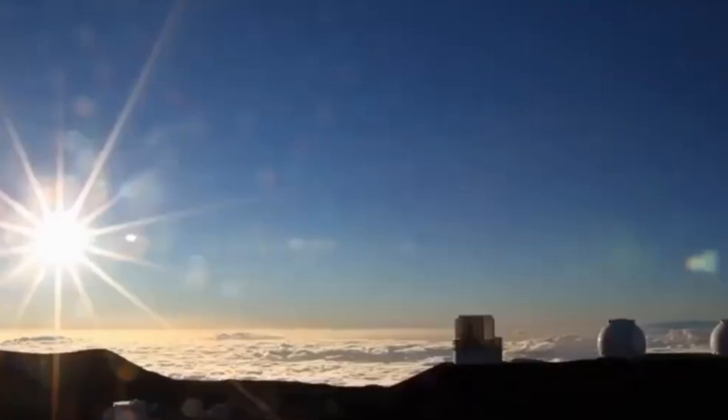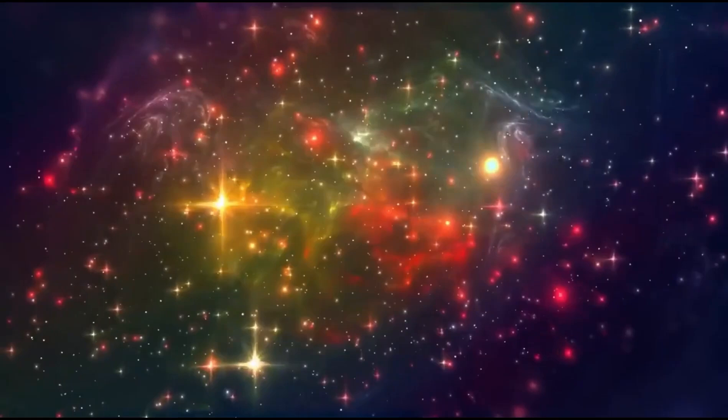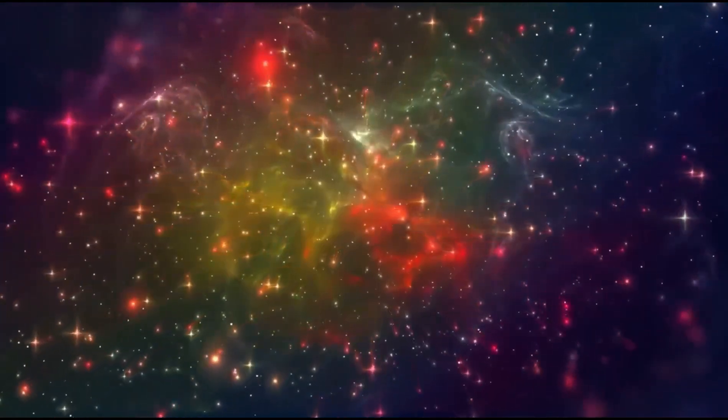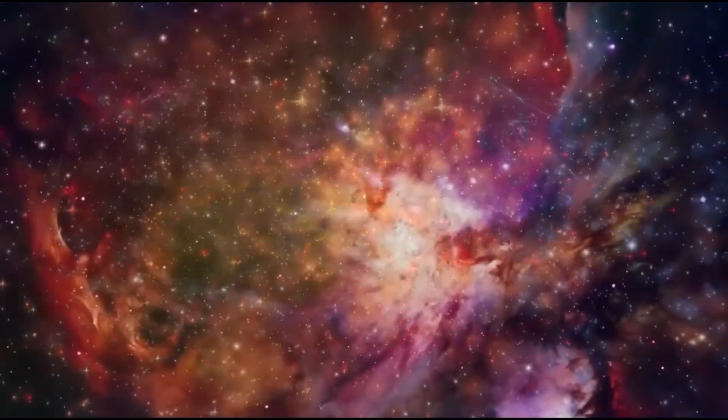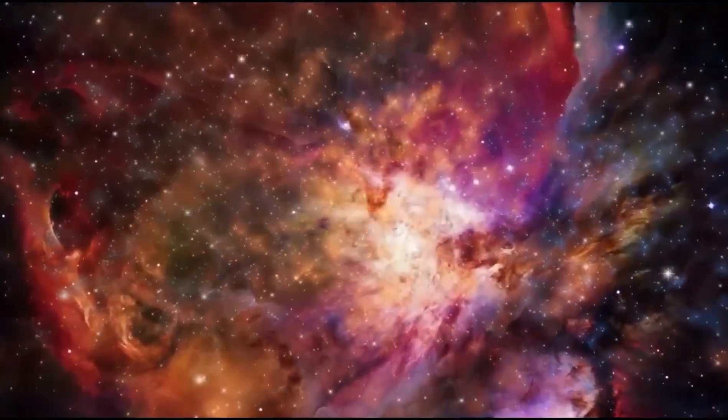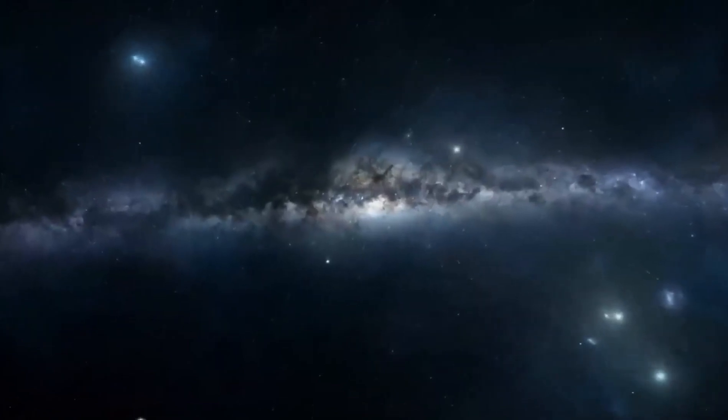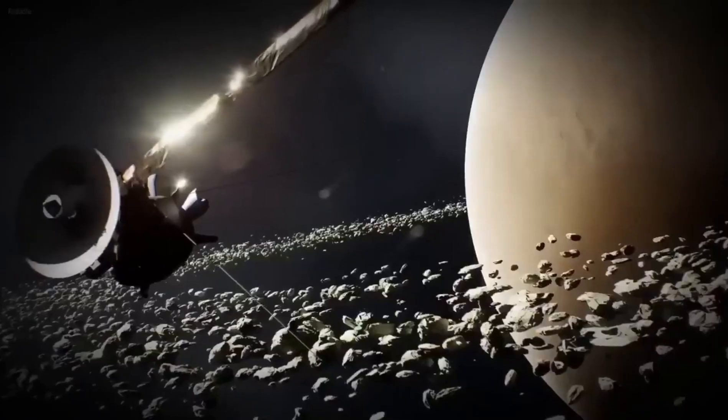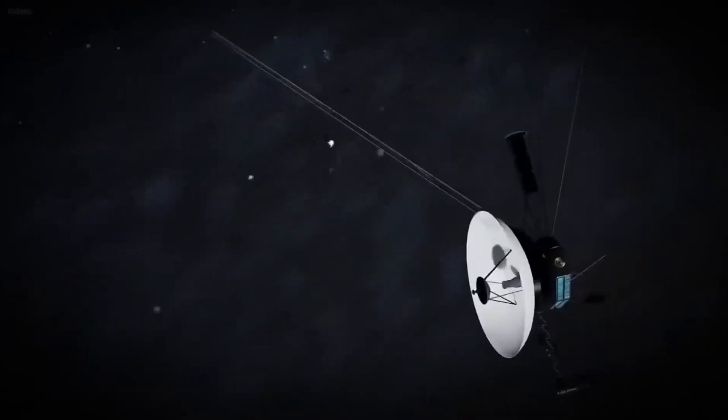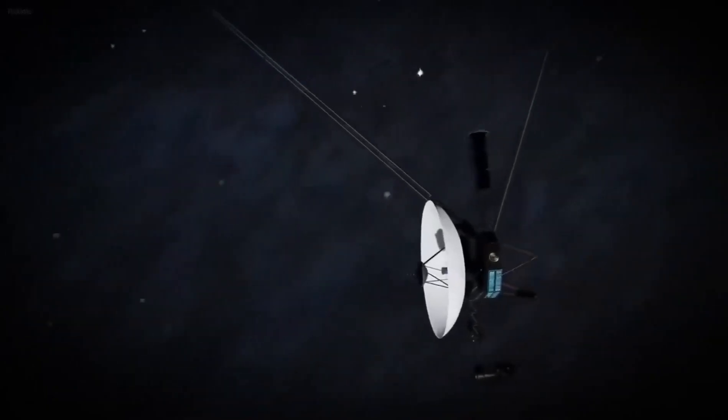In the improbable event that Voyager 1 discovers extraterrestrial life, they will receive a taste of what life is like on Earth. Voyager 1 will stay within the solar system until it leaves the Oort cloud in another 14,000 to 28,000 years.